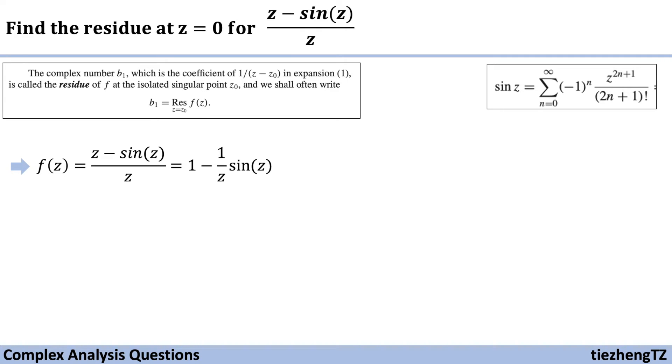Substituting the series expansion, we get 1 - (1/z) times the sum from n = 0 to infinity of (-1)ⁿ z^(2n+1)/(2n+1)!.